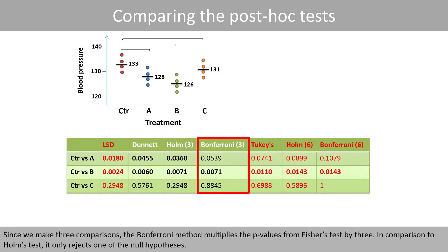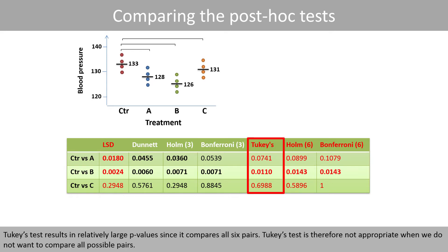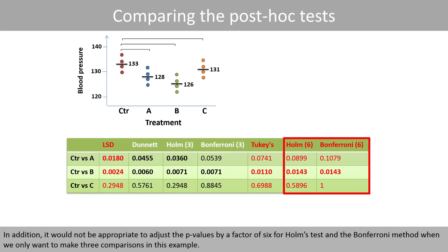Since we make three comparisons, the Bonferroni method multiplies the p-values from Fischer's LSD test by three. Compared to Holm's test, it only rejects one of the null hypotheses. Tukey's test results in relatively large p-values since it compares all six pairs, so it is not appropriate when we do not want to compare all possible pairs. It would also not be appropriate to adjust p-values by a factor of six for Holm's test and the Bonferroni method when we only want to make three comparisons.